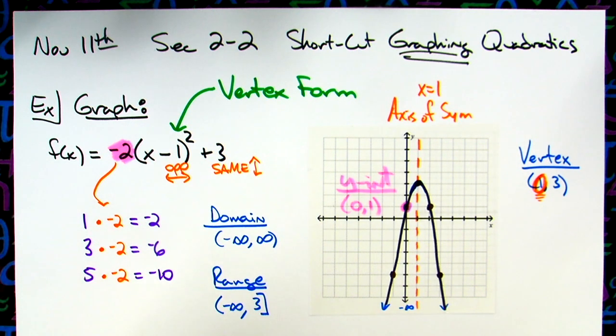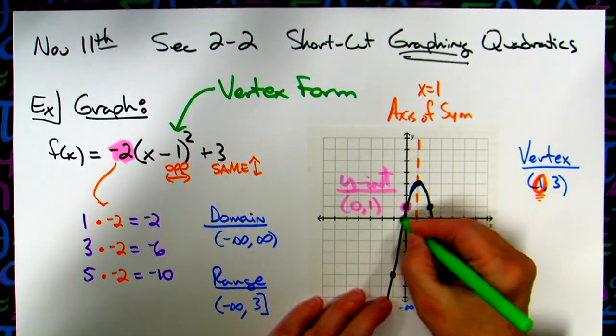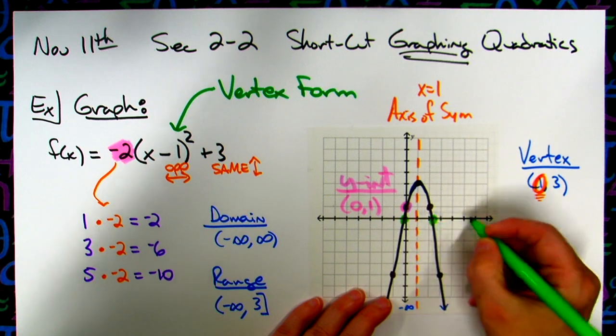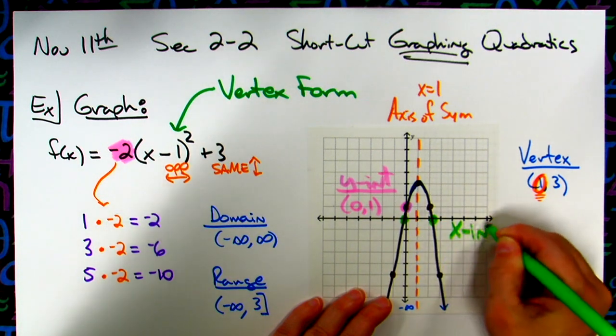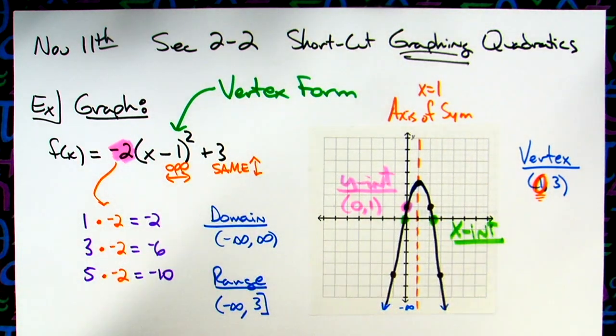Now, as for my x-intercepts, those are not so easy, right? So here's an x-intercept and here's an x-intercept. Those are x-intercepts. I have two of them. Now, just looking at the graph, I can't tell you what they are, right, because they don't cross at an even point. I'd have to estimate them, and I don't want to estimate them.